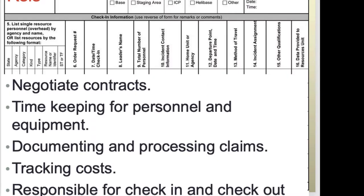The finance chief keeps track of all the finances, but also helps with coordinating and finding available resources. They're negotiating contracts, keeping time, processing claims, tracking costs, and responsible for people who check in and check out. There are different kinds of checklists that are used, and here's an example of one.